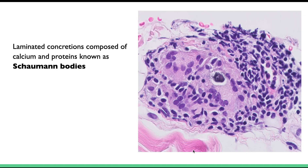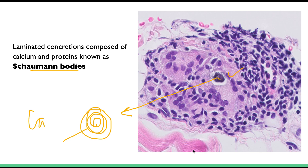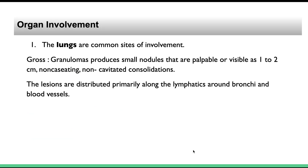The second inclusion is the Schaumann body, also present in giant cells. It is a laminated basophilic concretion composed of calcium and proteins. This is also characteristic of sarcoidosis.